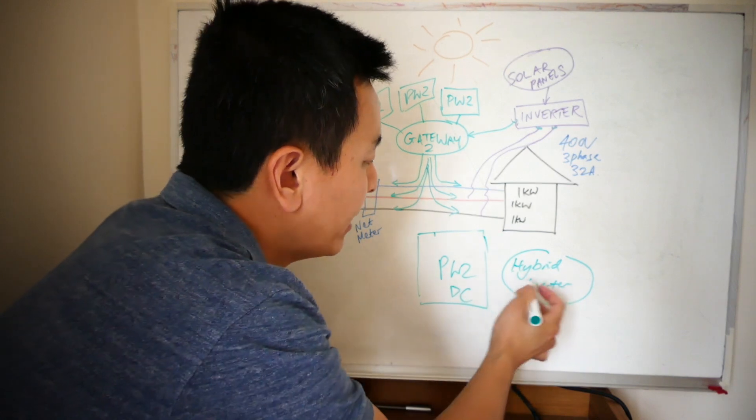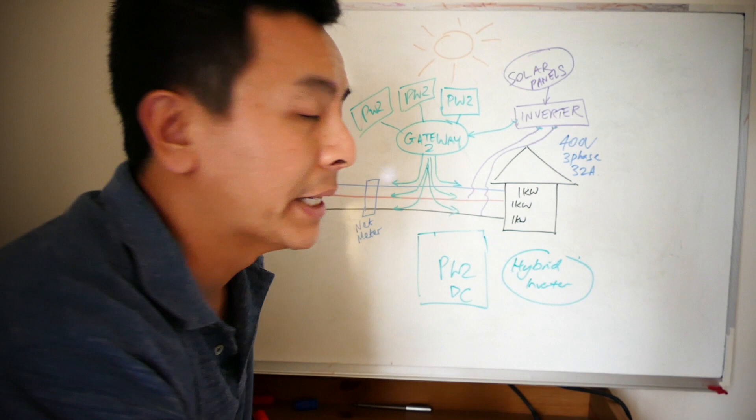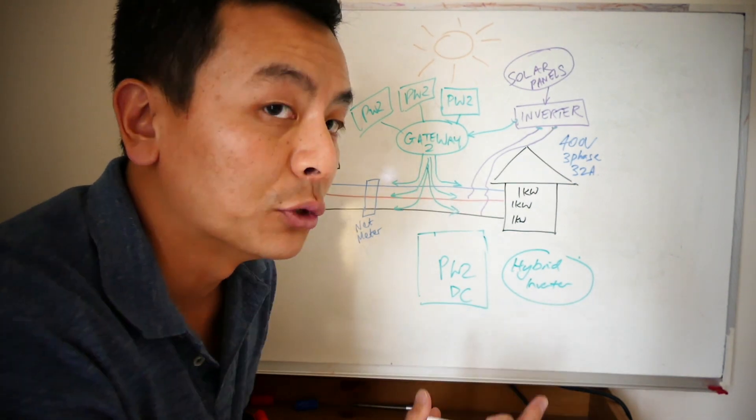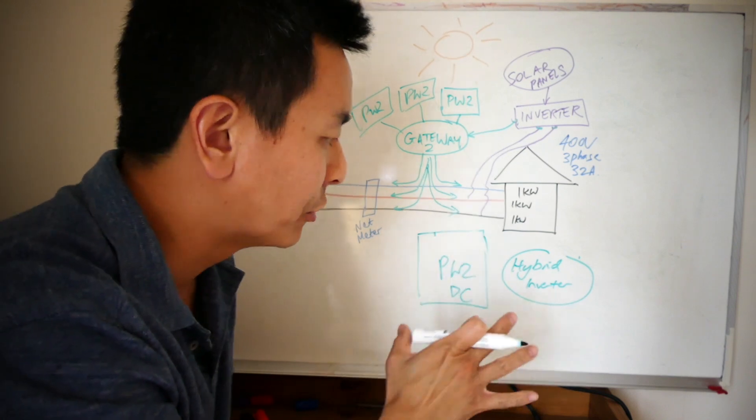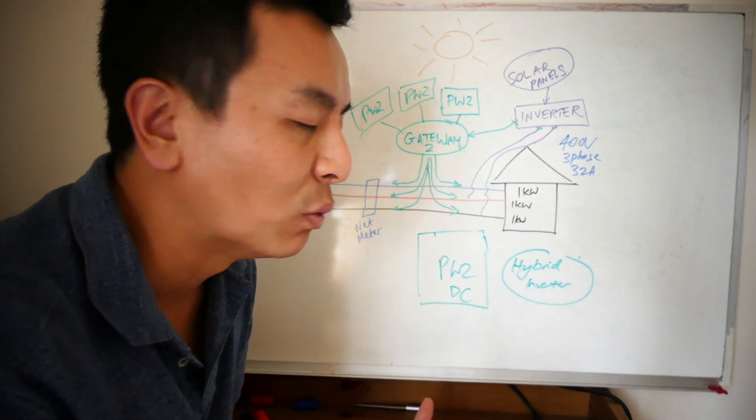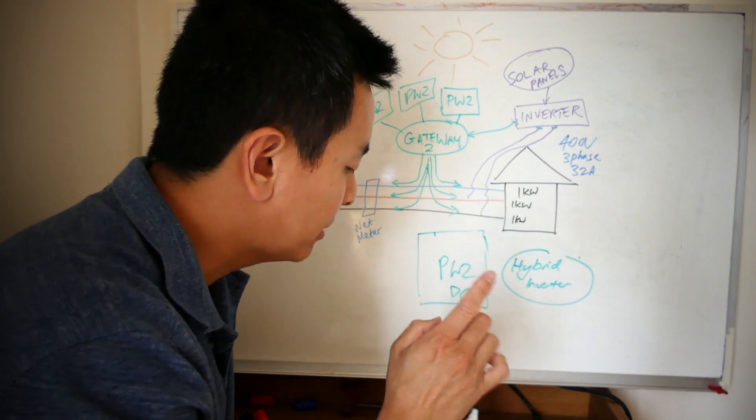So that would add to the cost of a DC Powerwall 2. Then you could potentially hook up three phases to this inverter, and then your solar panels could actually run in an off-grid situation. Now, the Powerwall 1 was DC, but I won't go too much into that because you cannot buy Powerwall 1 brand new anymore.